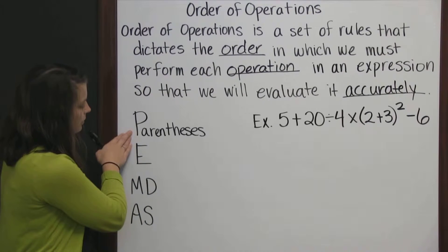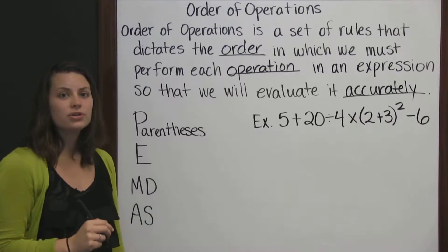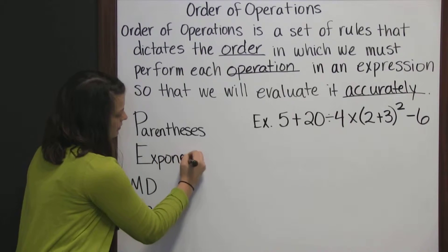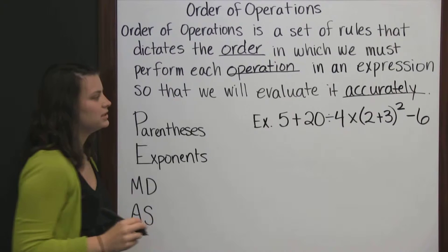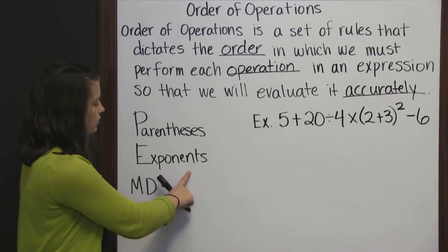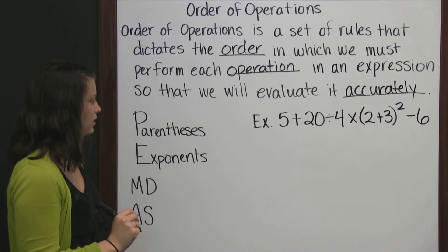After we're done with parentheses, we then move on to exponents. E is for exponents. So if there are any exponents in your expression that you're evaluating, you'll do those or simplify those after you've simplified everything in the parentheses.